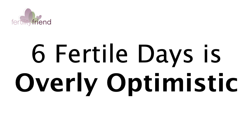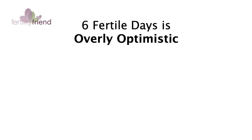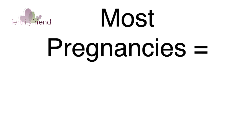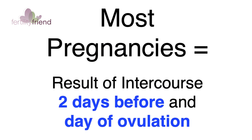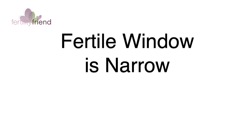When trying to conceive, however, considering six days as potentially fertile is really very optimistic. Although pregnancy is technically possible during this time frame, most pregnancies can actually be attributed to intercourse that takes place on the two days before ovulation and the day of ovulation. What this means practically is that the fertile window is really incredibly narrow when trying to conceive — just three days.